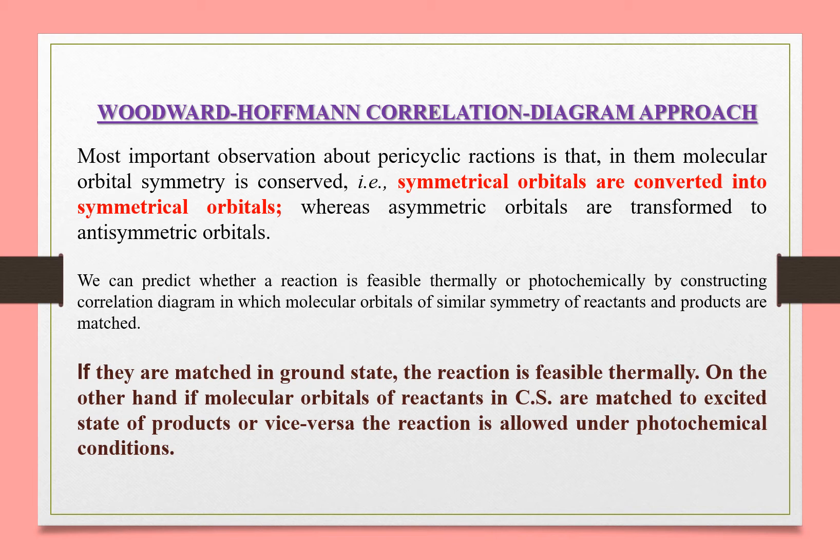Symmetric orbitals are converted into symmetrical orbitals. One of the reactant orbitals is symmetric. Symmetric orbitals are conserved into symmetrical orbitals, whereas asymmetrical orbitals are transformed into asymmetric orbitals.